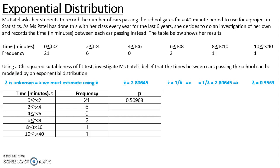So between 0 and 2, I get a probability of 0.50963. Between 2 and 4, I get 0.24991. Between 4 and 6, I get 0.12255. Between 6 and 8, I get 0.06009. For between 8 and 10, I get 0.02947, and the last one between 10 and 40 is 0.02835.